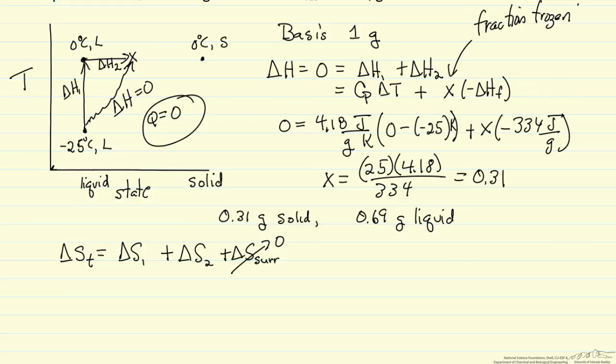The entropy change for heating up the liquid is the integral Cp dT over T from, and to be careful, we should use, since we have to use Kelvin in this calculation, I'm going to write the limits, and then the enthalpy change for phase change divided by the temperature is the entropy change, the phase change at constant temperature in the pathway we picked.